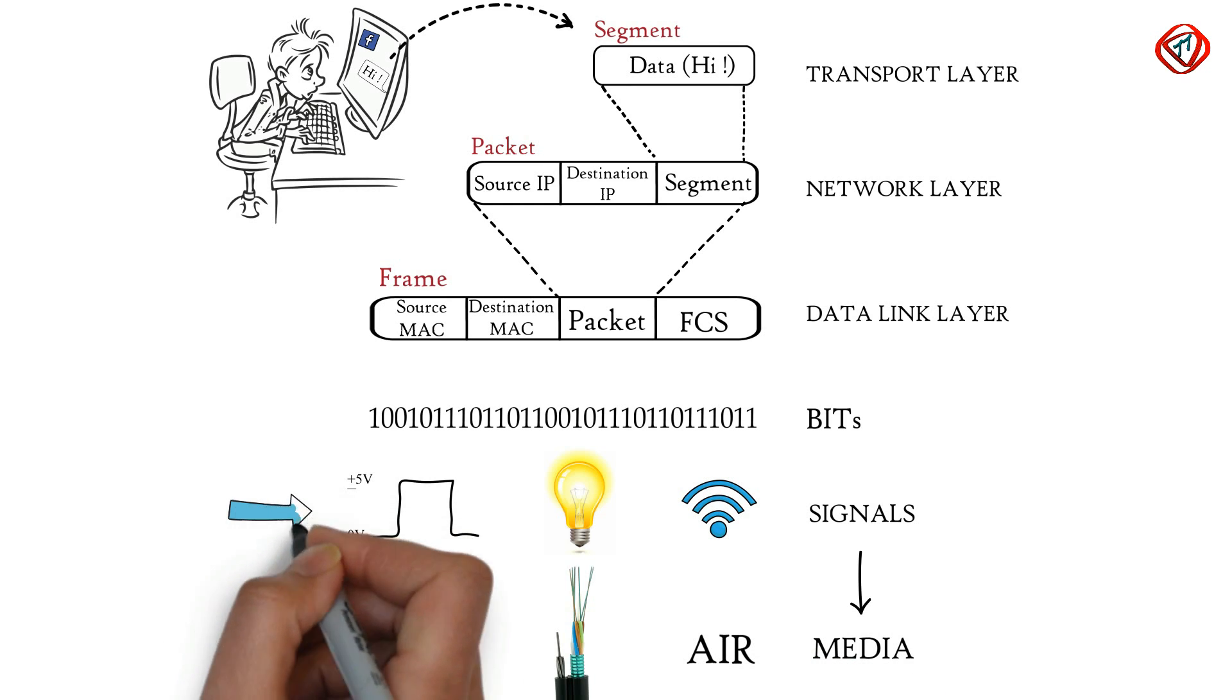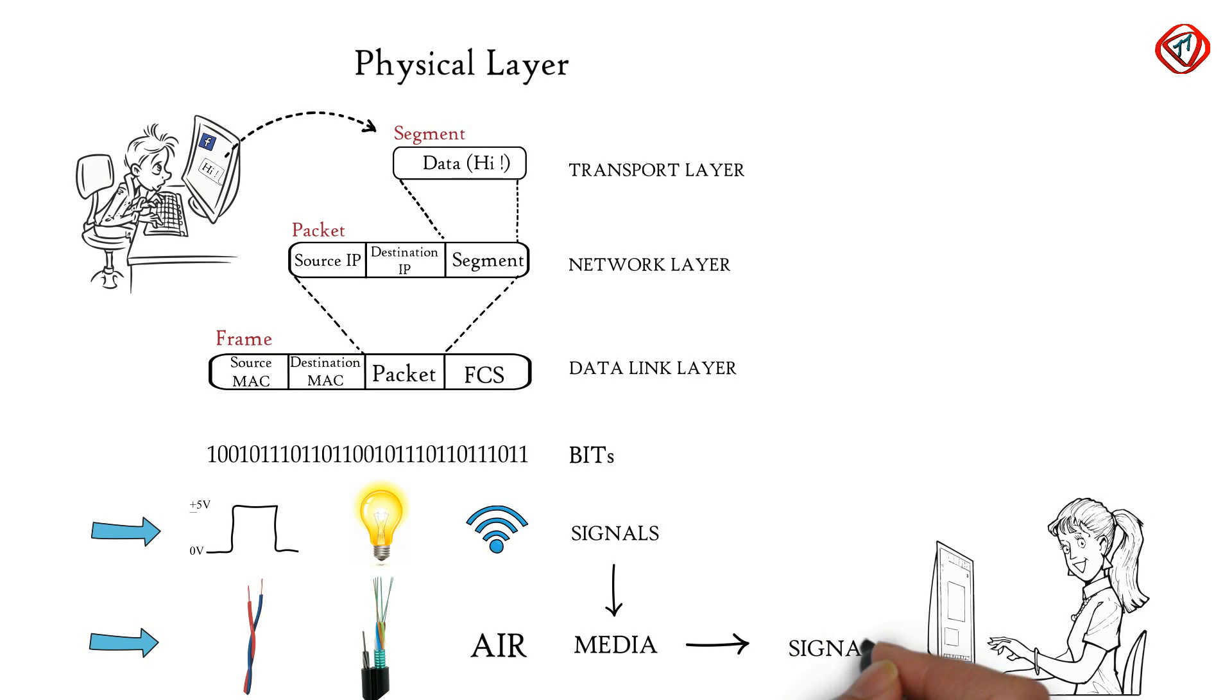So signal generated by physical layer depends on the type of media used to connect two devices. At the receiver, physical layer receives signals, converts it to bits, and passes it to data link layer as a frame.